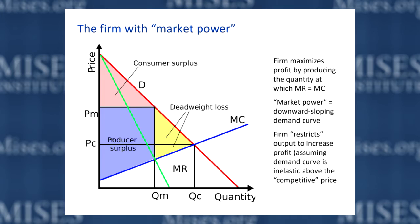So what are some critiques of neoclassical monopoly theory — or more precisely, critiques of the idea that monopoly is bad and that the government needs to step in and remedy the problem by breaking up the monopolist into smaller firms or by regulating the price and quantity? Within the neoclassical school itself, there are a number of critiques of the idea that monopoly should be remedied or corrected.